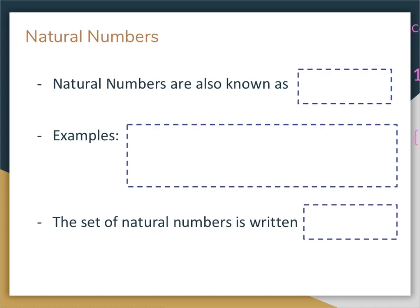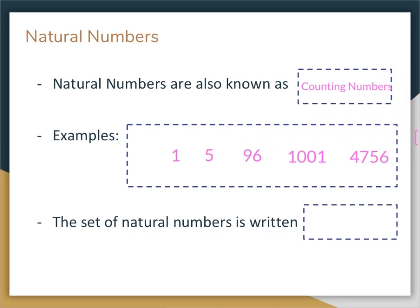Natural numbers are also known as the counting numbers. When you're talking about counting numbers, you're talking about 1, 2, 3, 4, 5 — those are all the natural numbers. Some examples are 1, 5, 96, 1001, 4,756. These are all of the counting numbers. If you started counting at one and going up, that's your natural numbers.